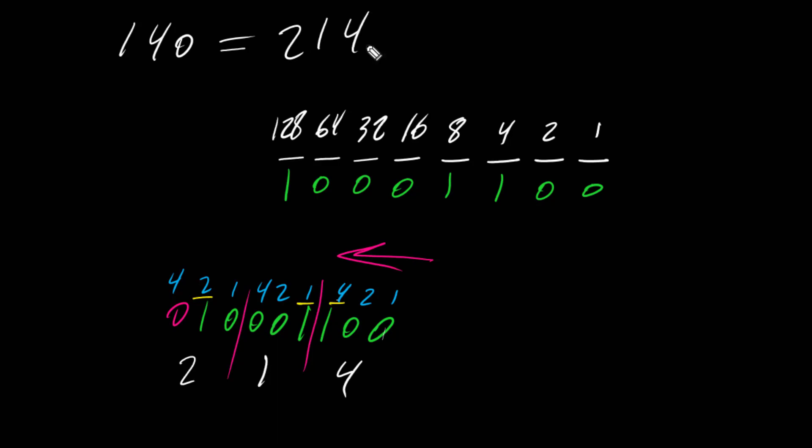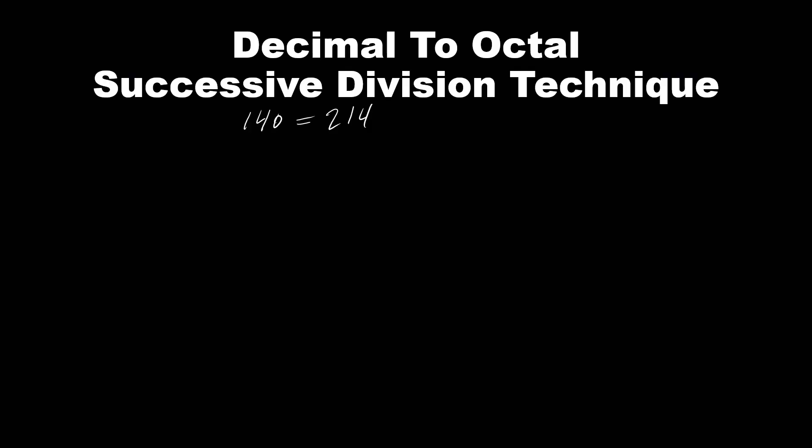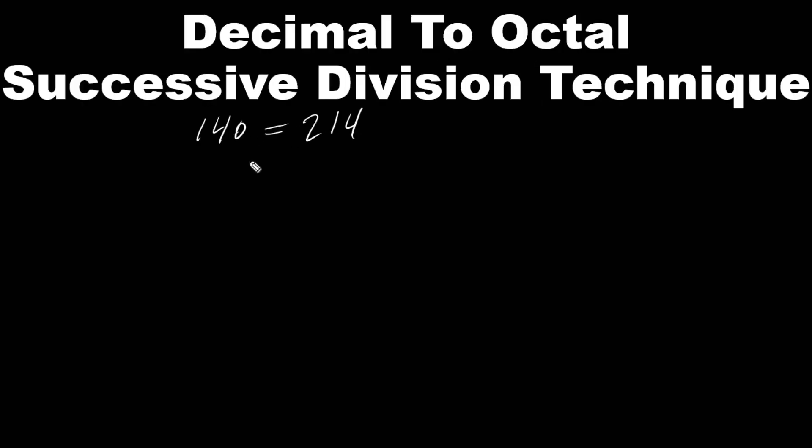Now, in this section, we will convert decimal to octal number using successive division technique. In other words, we are directly converting decimal number to an octal number. Let's see how. So in this section, we want to convert 140 decimal number to an octal number using successive division technique. We are using the same number we used earlier. So 140 decimal gives us 214 octal number. What do we have to do first? Writing down 140 divided by 8. Why 8? Because of the octal number.